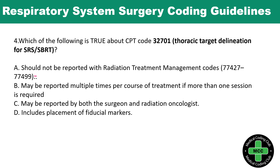Fourth question: which of the following is true about CPT code 32701? When coding for SRS or SBRT procedures, you should not report CPT 32701 together with a radiation treatment management code. Doing so would create duplication, because these services are reported only once per course of treatment. Therefore, you should not report both SRS/SBRT and radiation treatment management codes together. Answer A is correct.